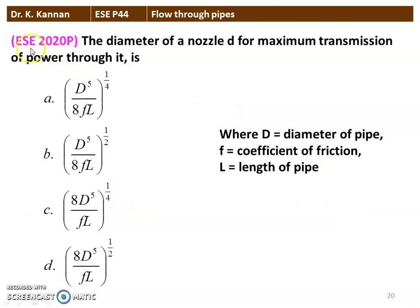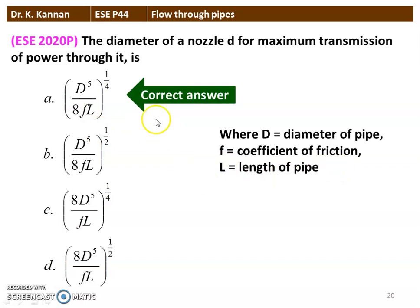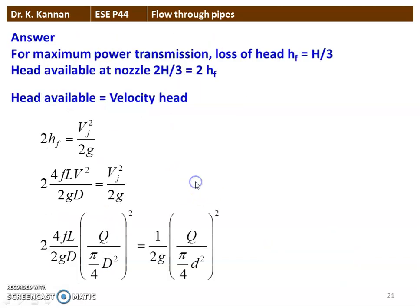The next question from the 2020 question paper: the diameter of a nozzle d for maximum transmission of power through it is — we have four options. Here D is the diameter of the pipe, F is the friction coefficient, and L is the length of the pipe. The correct answer is (D⁵/8FL)^(1/4). We will see how in the next slide.